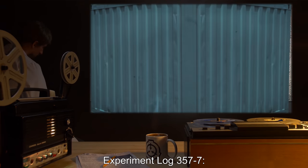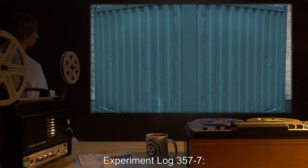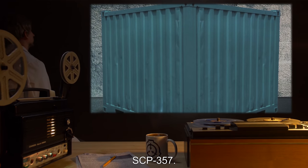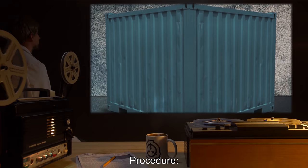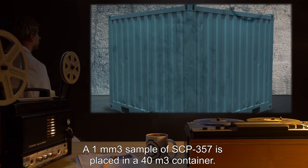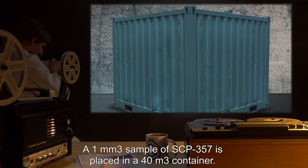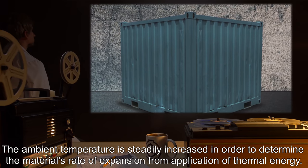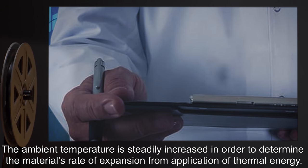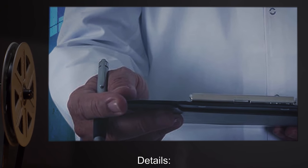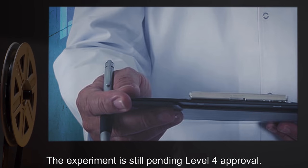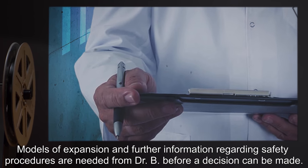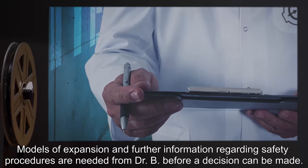Experiment Log 357-7. Date: Undisclosed. Subject: SCP-357. Procedure: A one millimeter cubed sample of SCP-357 is placed in a 40 meter cubed container. The ambient temperature is steadily increased in order to determine the material's rate of expansion from application of thermal energy. Details: The experiment is still pending Level 4 approval. Models of expansion and further information regarding safety procedures are needed from Dr. B before a decision can be made.